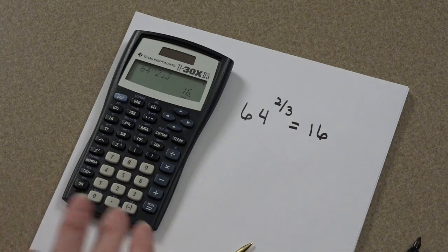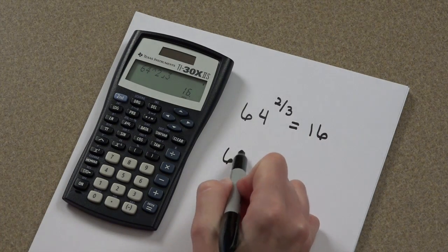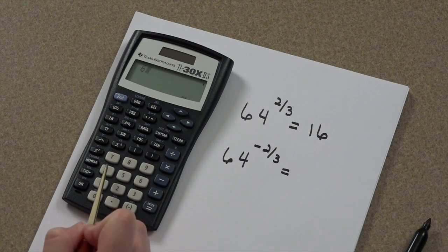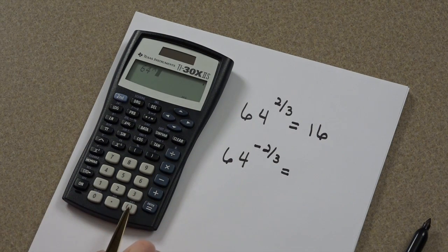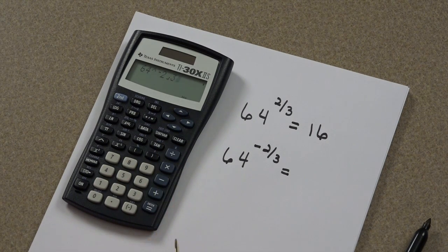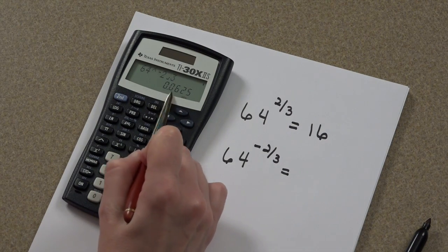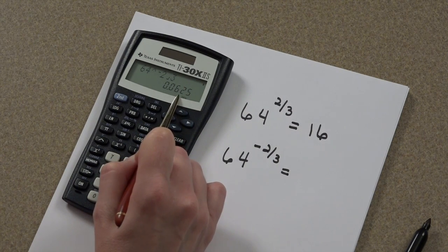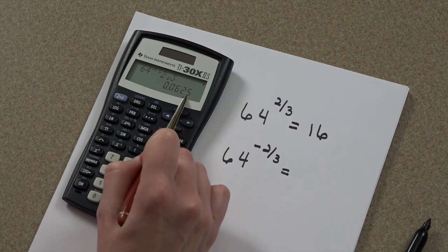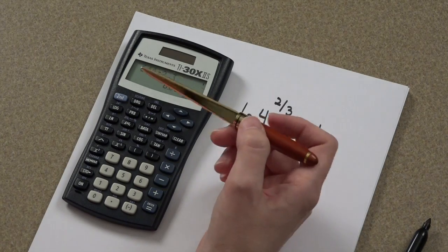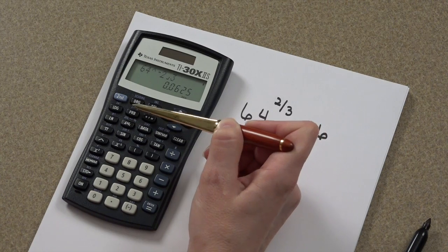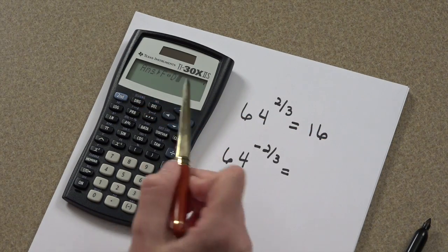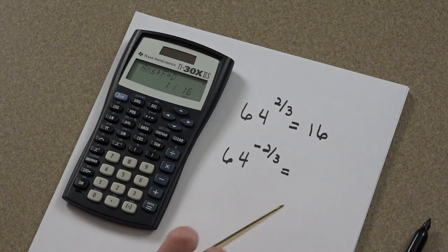Negative exponents are a little bit trickier. Let's take 64 to the negative 2 thirds power. 64 taken to the negative 2 thirds power, we get a fraction, or we get a decimal. We don't want a decimal for our answer. We want a fraction. We can use our calculator to convert this decimal to a fractional equivalent. We use this command right here, fraction to decimal, decimal to fraction. We'll press the second key, and this button will confirm we really want to convert this, and we get 1 over 16.